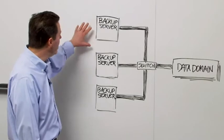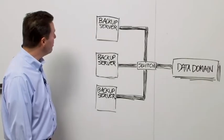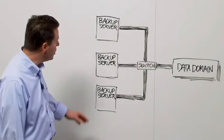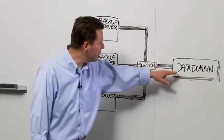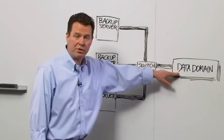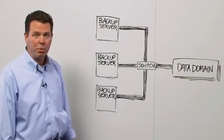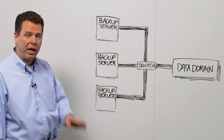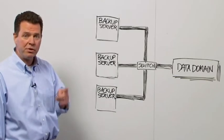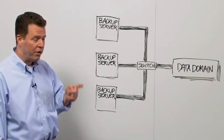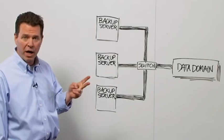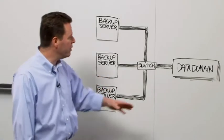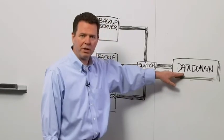What we have here is a regular backup environment as it may exist today, with a number of backup servers, an IP network and switch, as well as a Data Domain system where data is deduplicated in line. The deduplication process has four basic steps: segments are identified, they're determined to be unique or not, if they're unique they're compressed, and then they're written to the storage subsystem on the Data Domain.